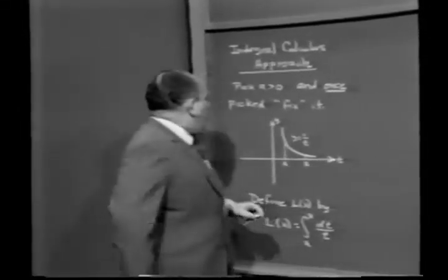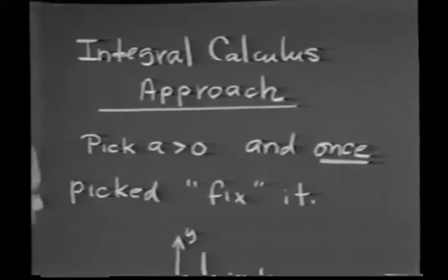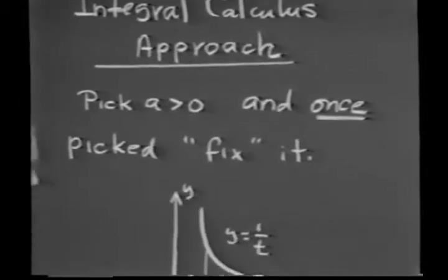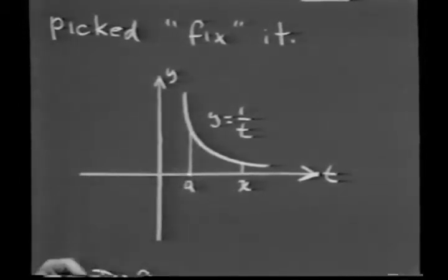By the integral calculus approach, what we do is we pick any positive number a. And once picked, we fix it. We have a great deal of freedom in how we choose the positive number a, but let's pick one and leave it here.